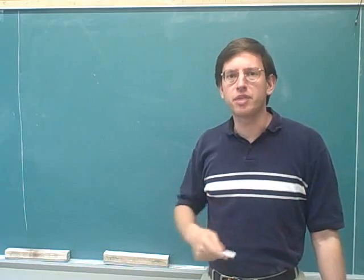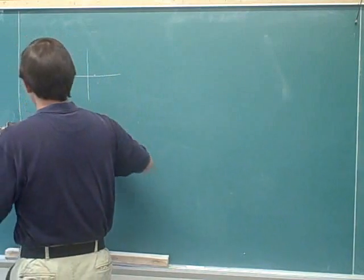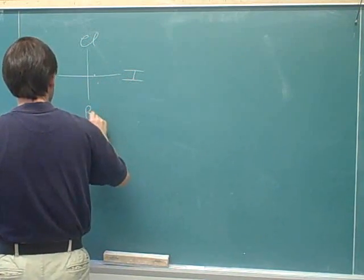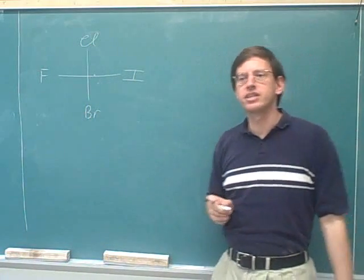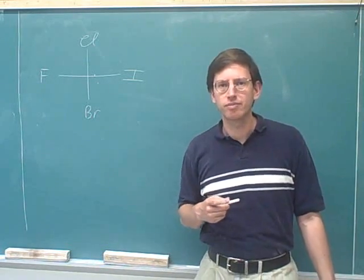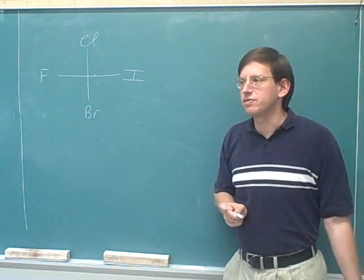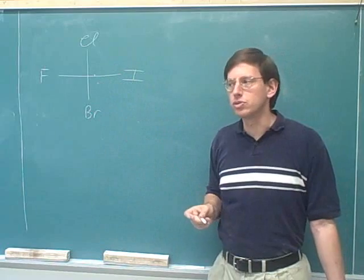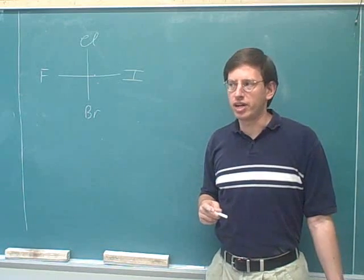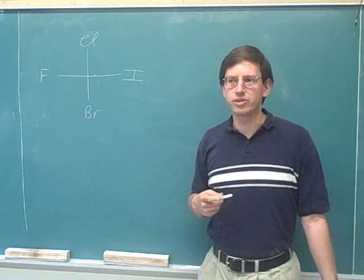The first thing we have to learn is how to assign priorities to the groups attached to the stereocenter. The system for assigning priorities is that a higher atomic number indicates a higher priority. To go through these videos, you'll need a periodic table, because an important part of finding R and S is deciding what the priorities of the atoms are based on their atomic numbers.